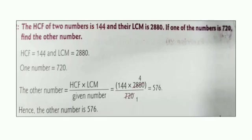We will cancel it by 720. 720 times 1 is 720 and 720 times 4 is 2880. Now we have 144 and 4. So we will multiply 144 by 4 and we get 576. So the other number is 576.